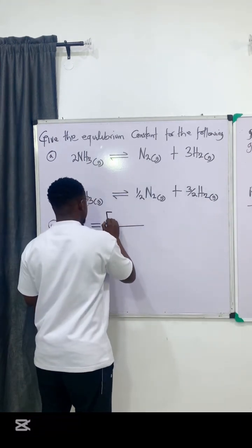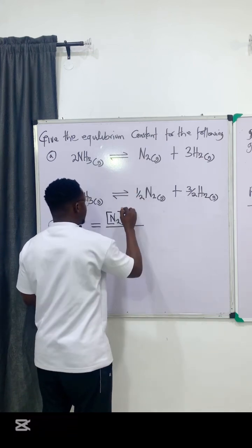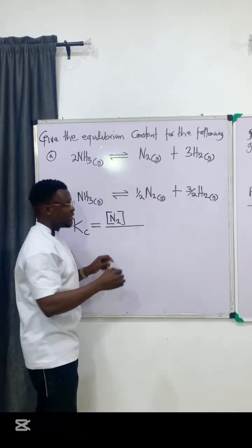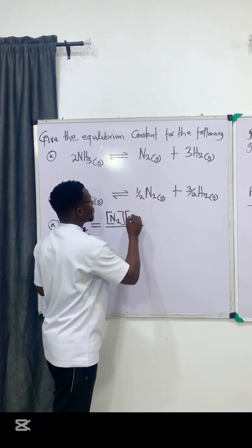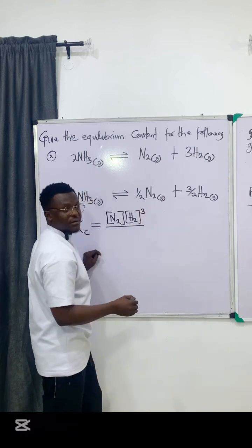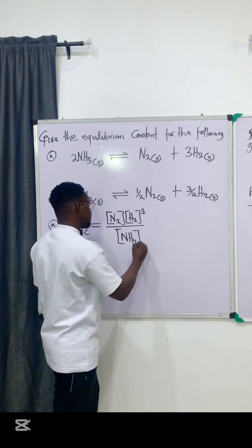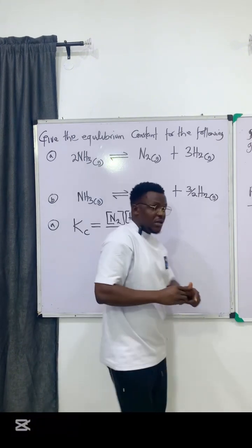I'll say concentration of nitrogen raised to the power of 1, because the coefficient of this is 1, but I'm not going to write it, times hydrogen raised to the power of 3, divided by ammonia raised to the power of 2.